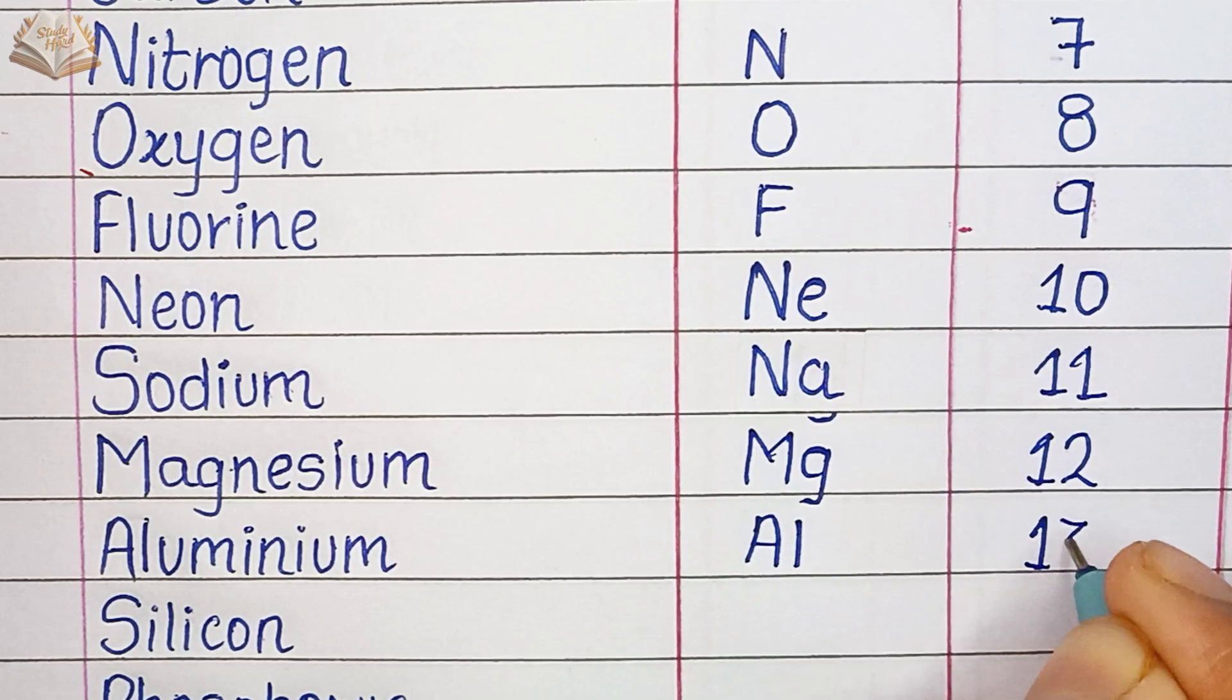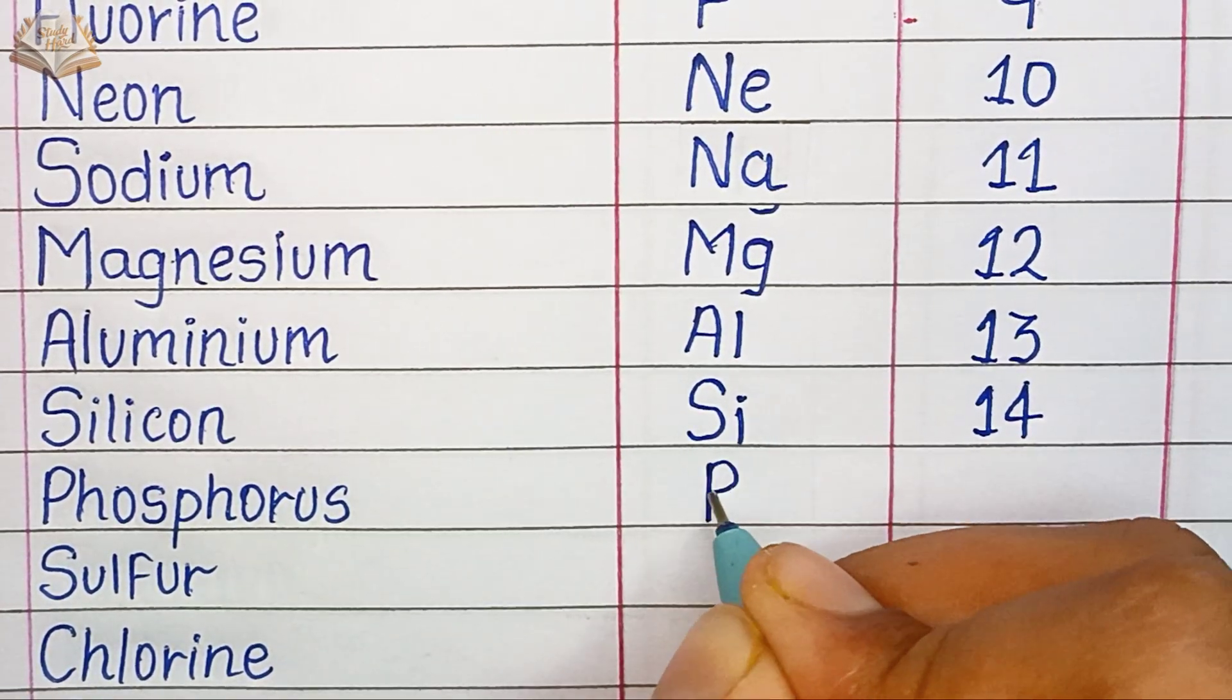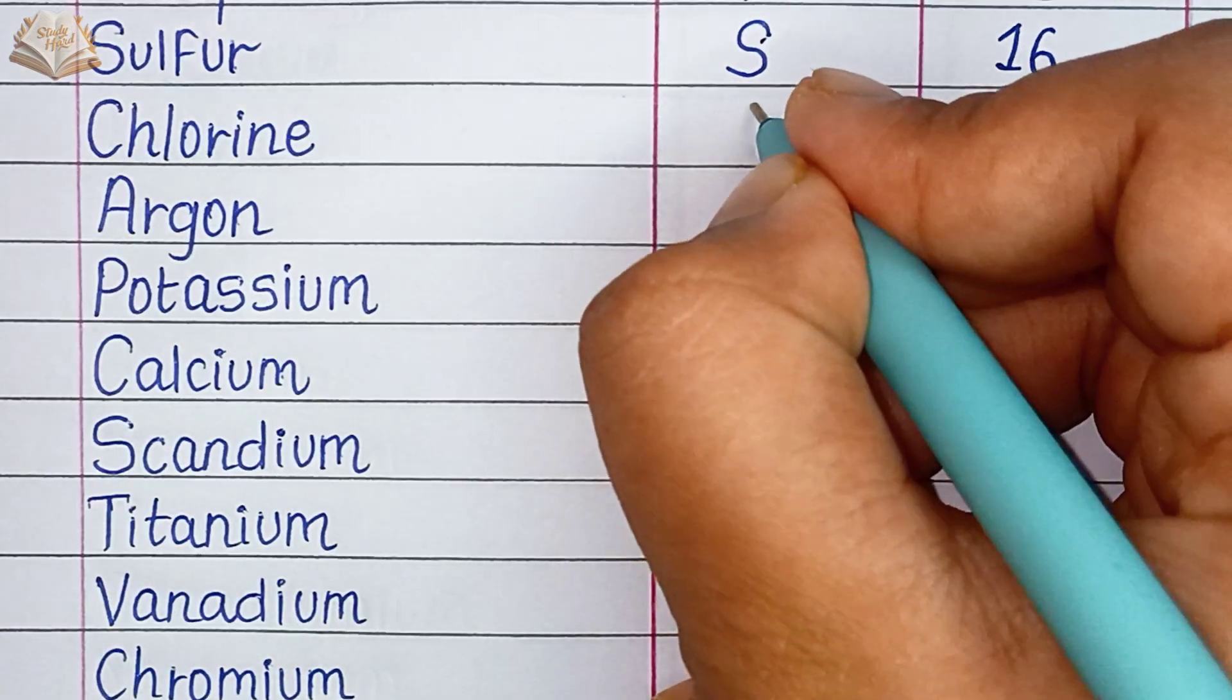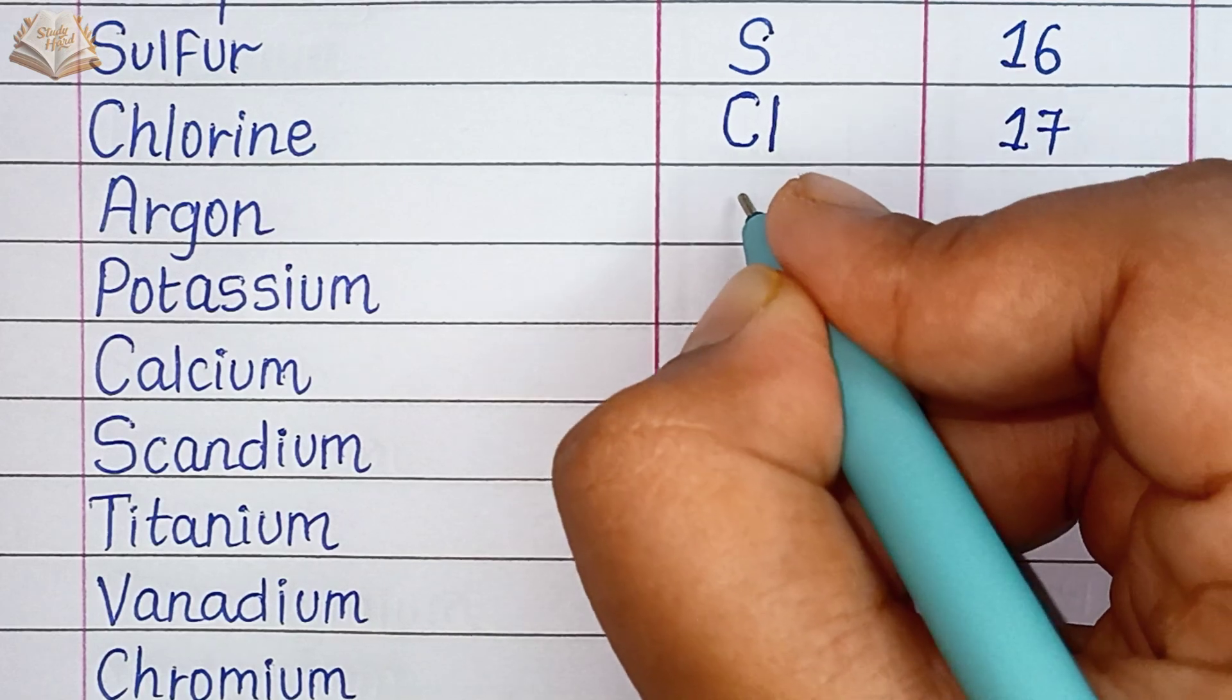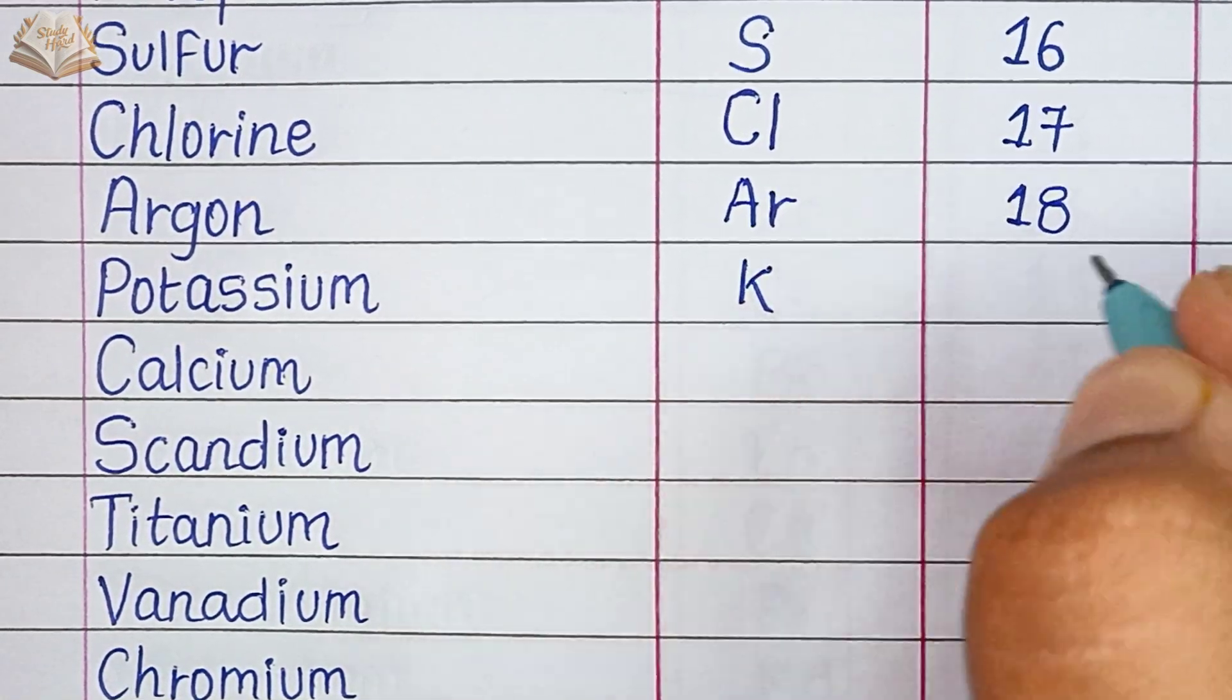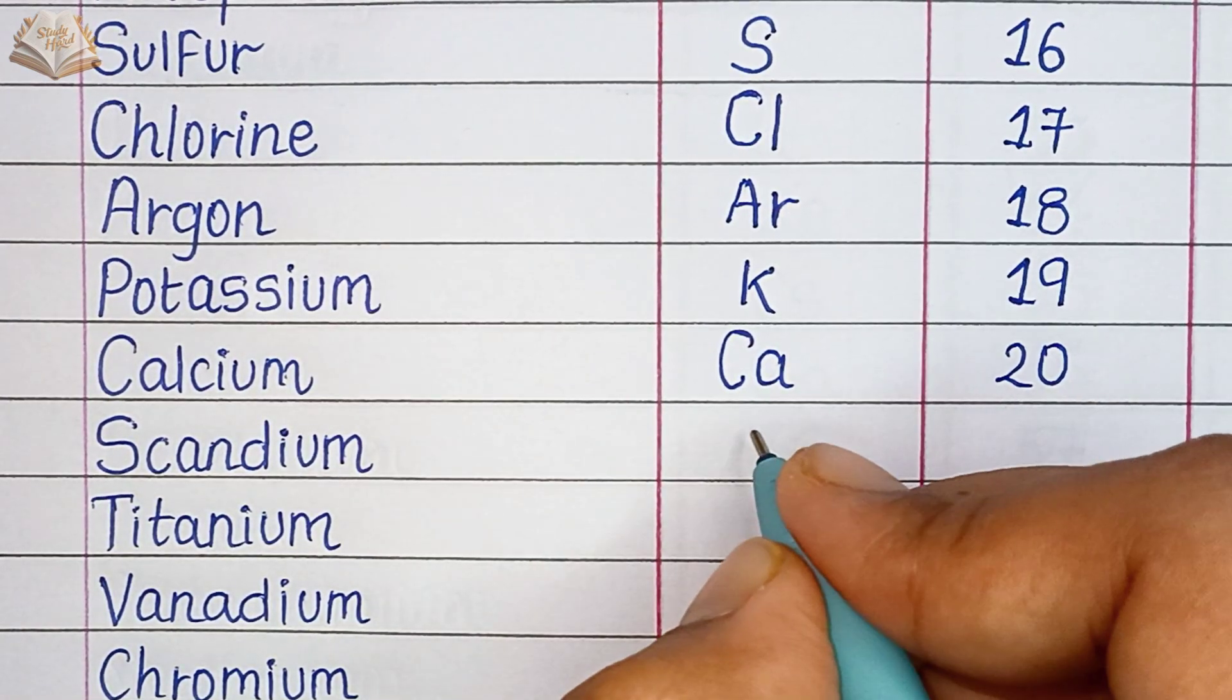Aluminium, Al, atomic number 13. Silicon, Si, atomic number 14. Phosphorus, P, atomic number 15. Sulfur, S, atomic number 16. Chlorine, Cl, atomic number 17. Argon, Ar, atomic number 18.